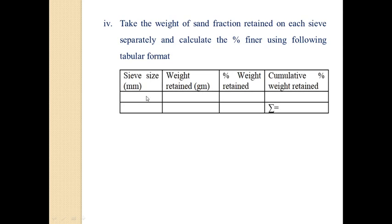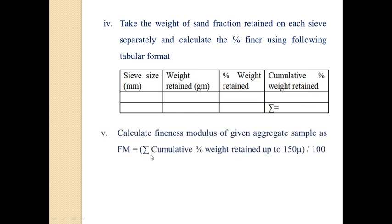Here we see the format. Firstly the sieve size. The sieves are arranged in descending order, that is 80 mm to the last 75 micron. Then weight retained, then percentage weight retained we can calculate it, and lastly the cumulative percentage weight retained. And lastly we are finding out the fineness modulus using the formula.